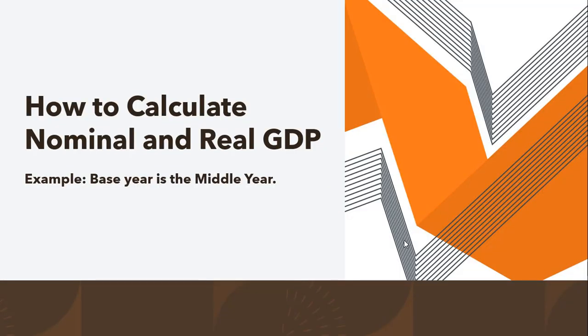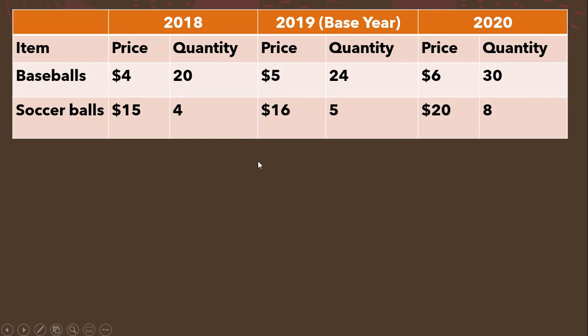Hello. In this video we're going to calculate nominal and real GDP using three years of data where the base year is the middle year. Here's our simple economy — we've got three years of data, price and quantity data on two goods: baseballs and soccer balls.